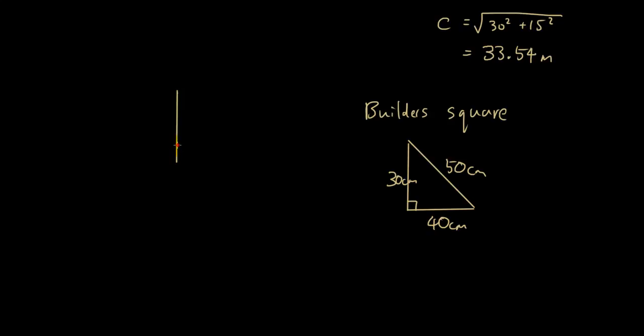You would put this device over here to make sure that there's a right angle, and then you're going to lay out the second line using the edges of the builder square to form the second line. So then you know for sure that all four lines are going to follow right angles.